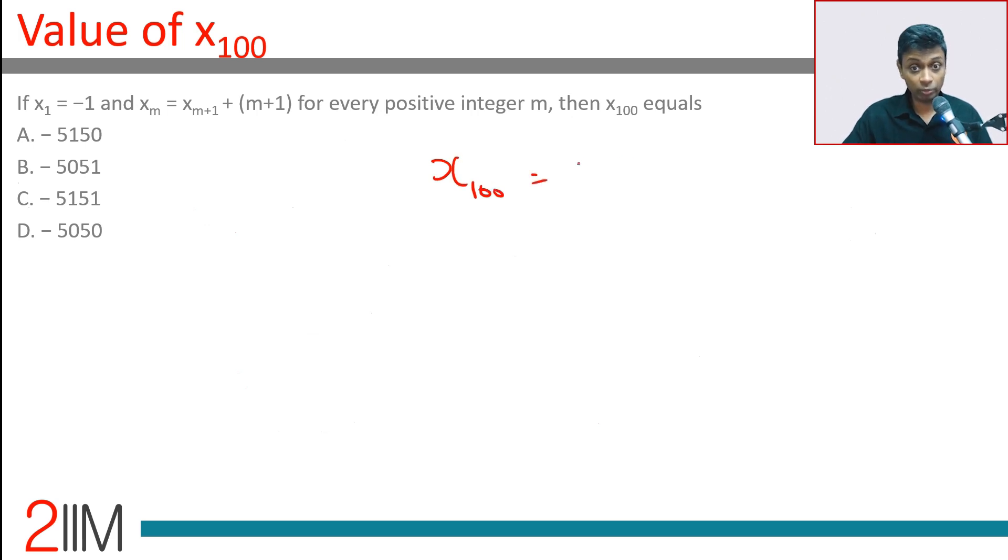That's -1 times 100 times 101 divided by 2, which equals -5050. Lovely.